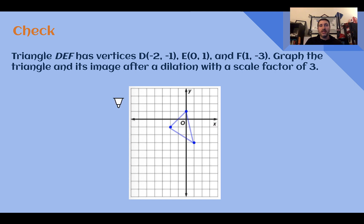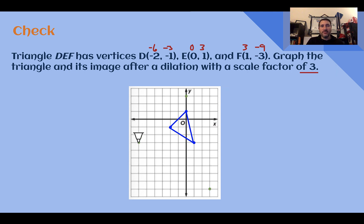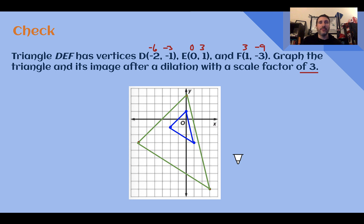Let's check. Our pre-image has its original coordinates. With a scale factor of 3, we multiply all coordinates by 3: the x-coordinates become -6, 0, and 3; the y-coordinates become -3, 3, and -9. Signs do not change for a dilation since we are not multiplying by a negative number. Plotting (-6, -3), (0, 3), and (3, -9) gives the image — three times as large and three times as far from the center of dilation.